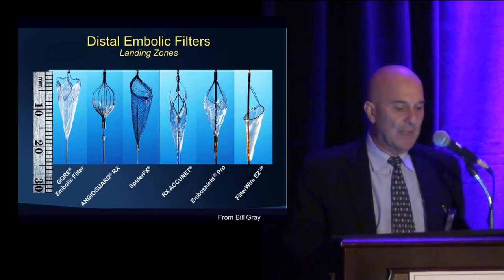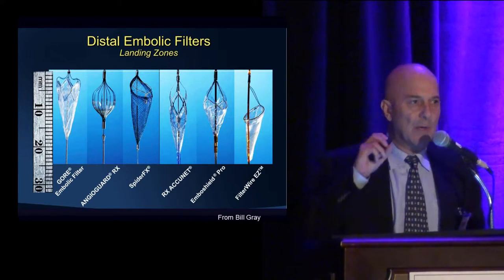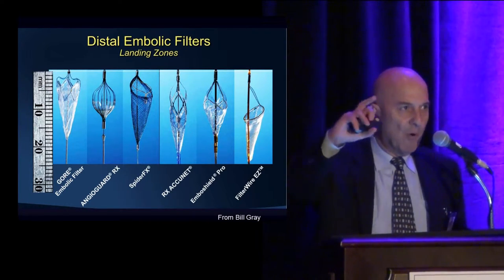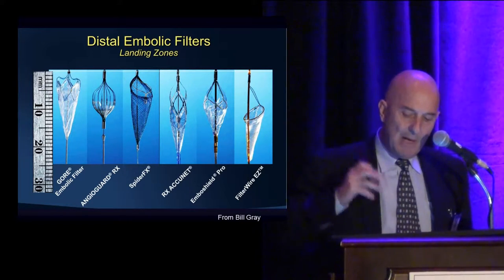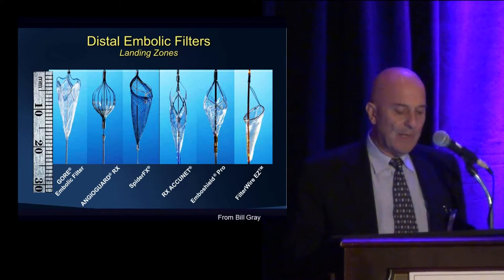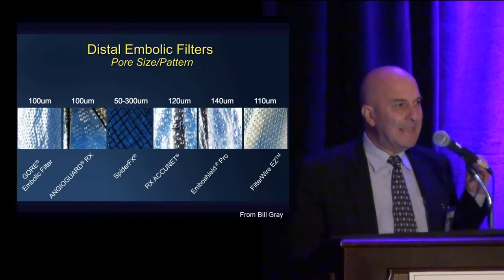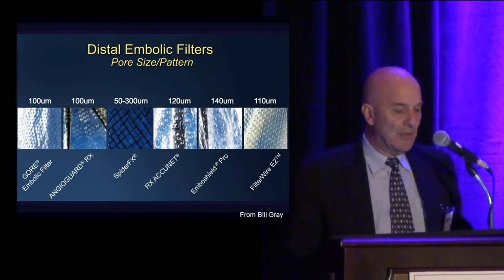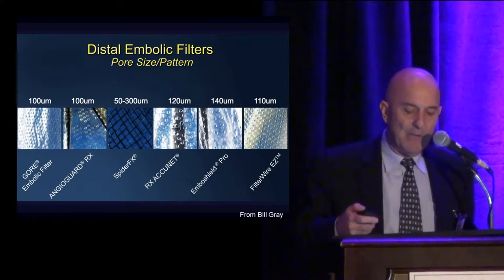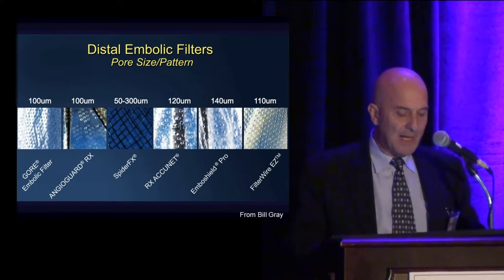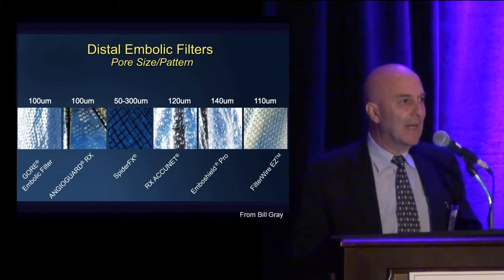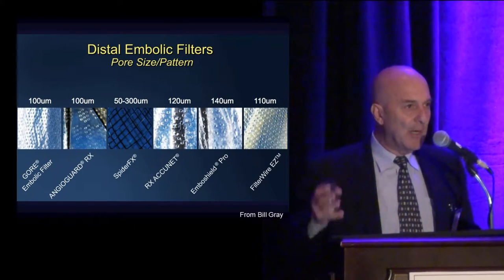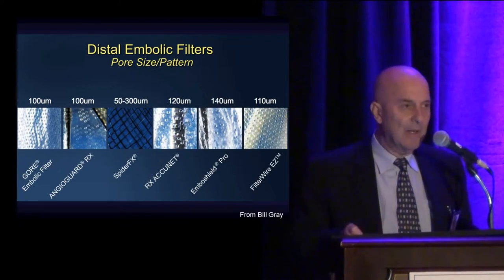Looking at the filters, as you can see, there are different filters and they look different. They have different landing zone requirements — some need more real estate to be placed distal to the lesion, some are shorter, which is an important feature when selecting one. The material varies, as does the size of the pores. The most popular pore size is 100 microns, but the Spider filter has pores almost three times larger, meaning it may not protect the brain as well.